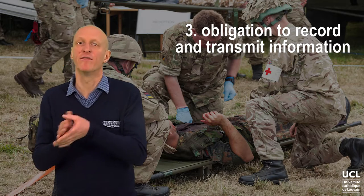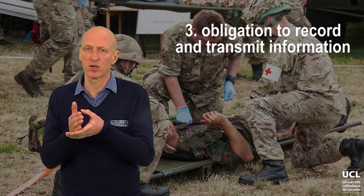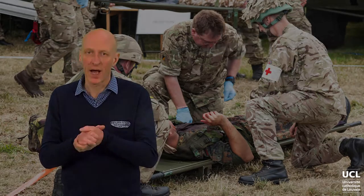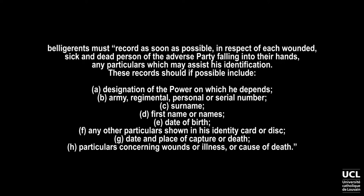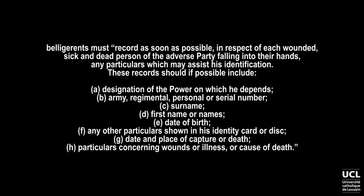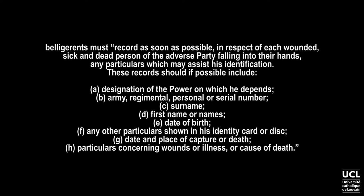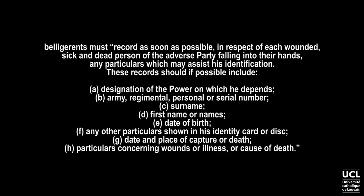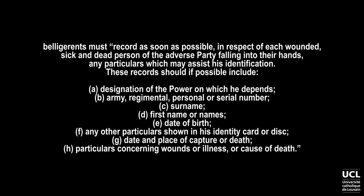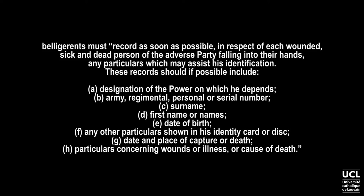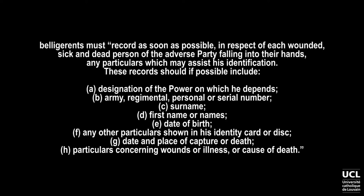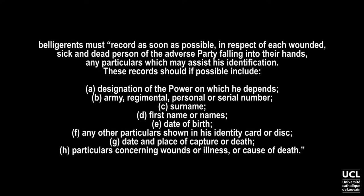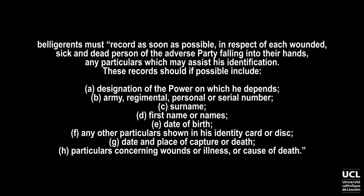Obligation to record and transmit information. This obligation, enshrined in Article 16.1 and 16.2 of Geneva Convention 1, obliges the belligerents to record as soon as possible, in respect of each wounded, sick and dead person of the adverse party falling into their hands, any particulars which may assist his identification. This record should, if possible, include: a) designation of the power on which he depends; b) army, regimental, personnel or serial number; c) surname; d) first name or names; e) date of birth; f) any particulars shown on his identity card or disk; g) date and place of capture or death; h) particulars concerning wounds or illness or cause of death.